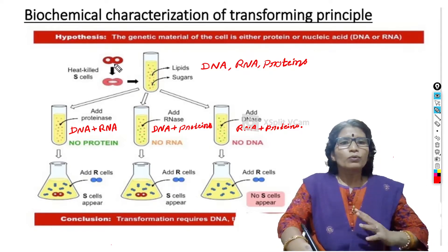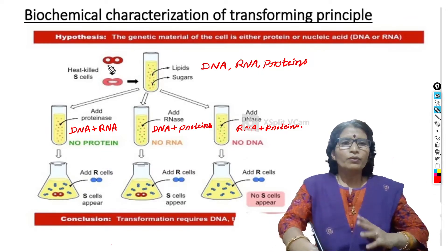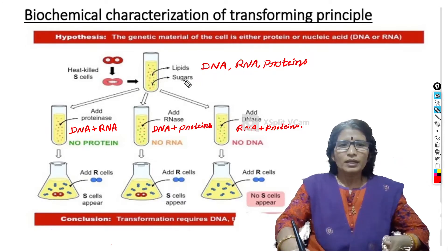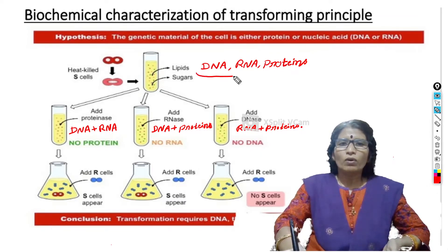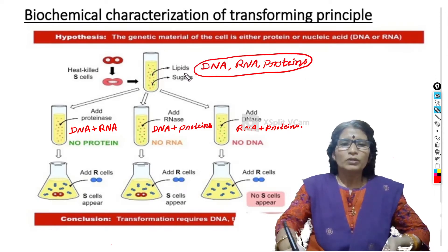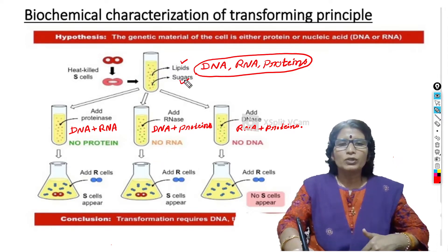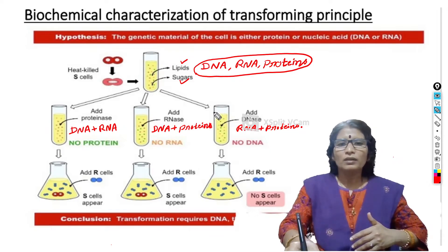In this experiment, they took two types of cells: heat-killed smooth cells and rough Streptococcus cells. First they took heat-killed smooth cells and made a solution in a test tube. In this test tube, five types of molecules were present: lipids, sugars, DNA, RNA, and proteins. Since they wanted to concentrate on DNA, RNA, and proteins only, scientists removed the lipids and sugars by adding some enzymes. After removing lipids and sugars, only three molecules remained: DNA, RNA, and proteins. This solution was then divided equally into three other test tubes.